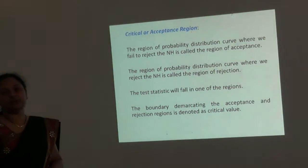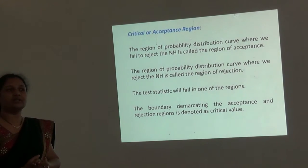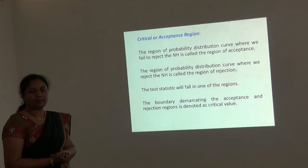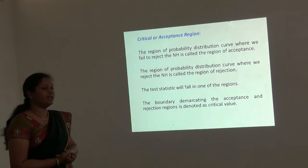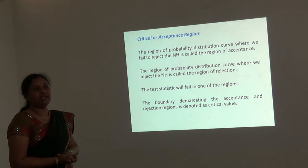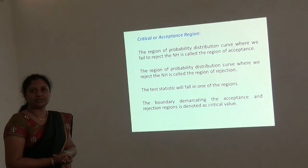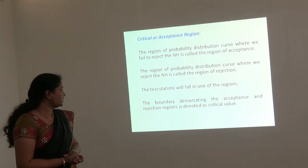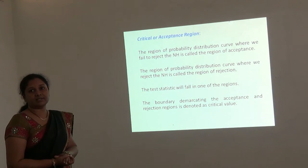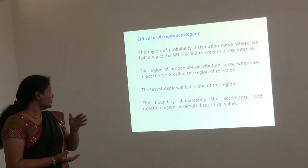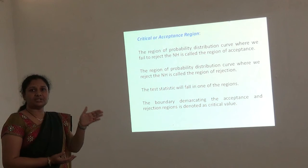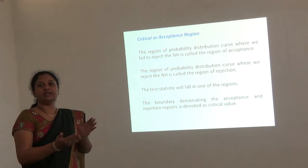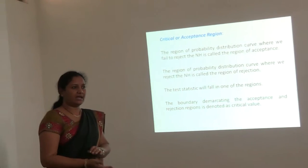Now here comes another concept of critical or acceptance region. How we accept or reject null hypothesis is based on this region. The region of the probability distribution curve — a bell-shaped curve — where we fail to reject the null hypothesis is called the region of acceptance. If the calculated value of Z falls in the acceptance region, we say we accept the null hypothesis. Similarly, the region of the probability distribution curve where we reject the null hypothesis is called the rejection region. The boundary which demarcates the acceptance and rejection regions is called the critical value. A test statistic will always fall in either the rejection region or the acceptance region.